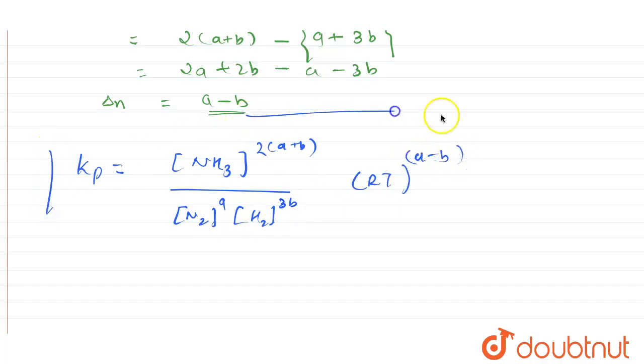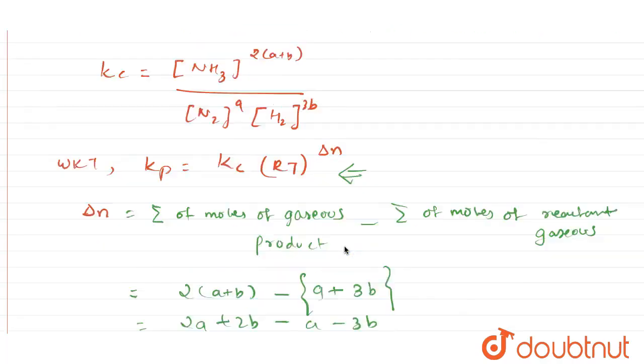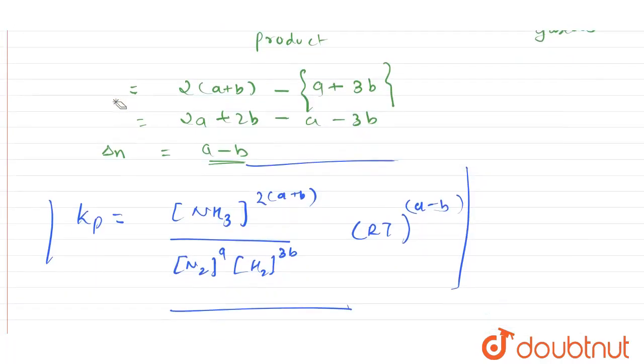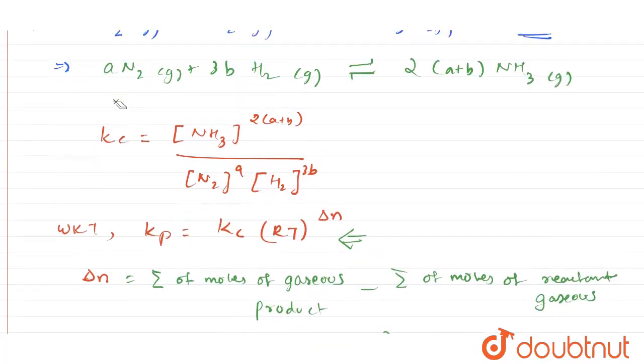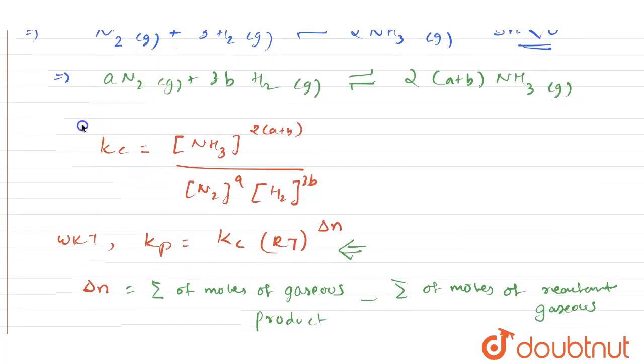So this will be the value for Kc, and this will be the value—sorry, this is going to be the value of Kp, and this will be the value of Kc.